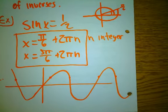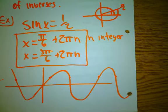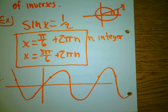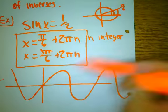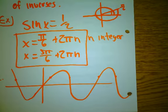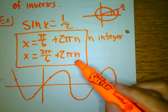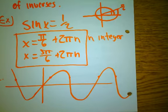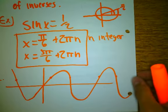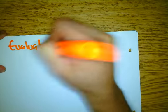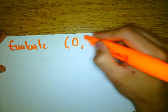Notice that the instructions didn't give you any restrictions — that's the reason I gave that answer. If it gives you restrictions, use the restrictions. For example, if I give you the following problem: evaluate from 0 to 2π — look at the way that I wrote this. That means the unit circle; I'm only looking for answers on the unit circle.